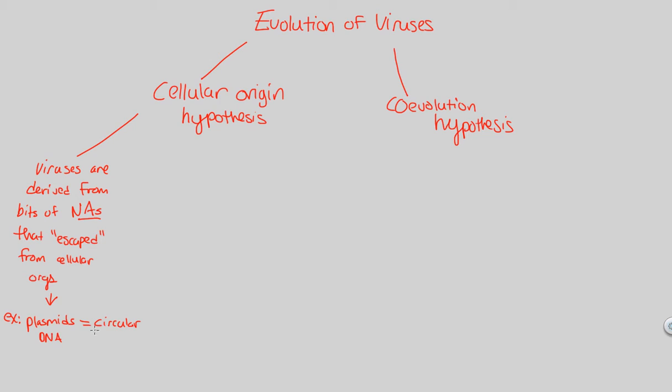This circular DNA is in prokaryotes, bacteria. And so, we also saw the phage lambda.